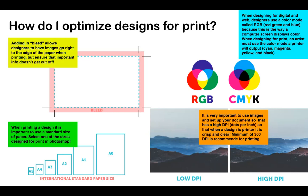The last really key part is to use images and set up your document with a high DPI — dots per inch. When a design goes through the printer, the ink puts dots on your paper. You want at least 300 dots per inch. That ensures that when your design prints, it's going to be crisp and clear. Always do at least 300 DPI when printing.